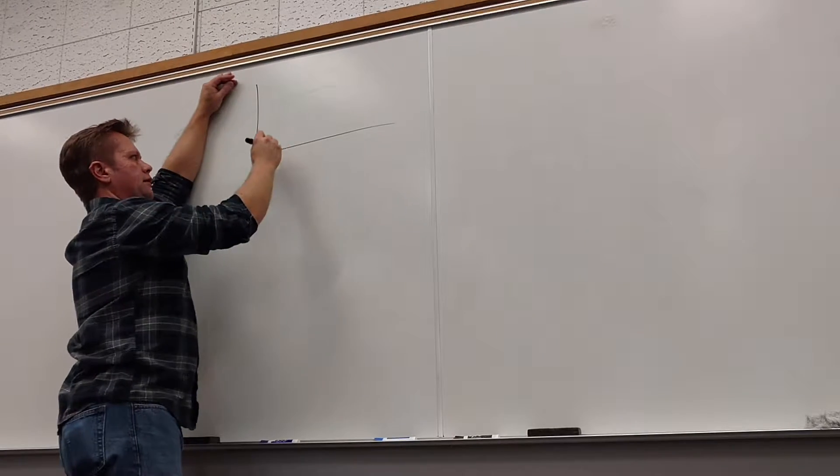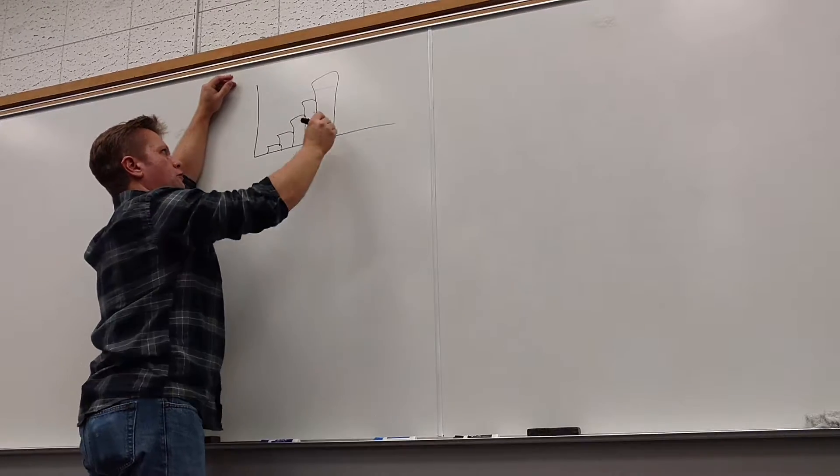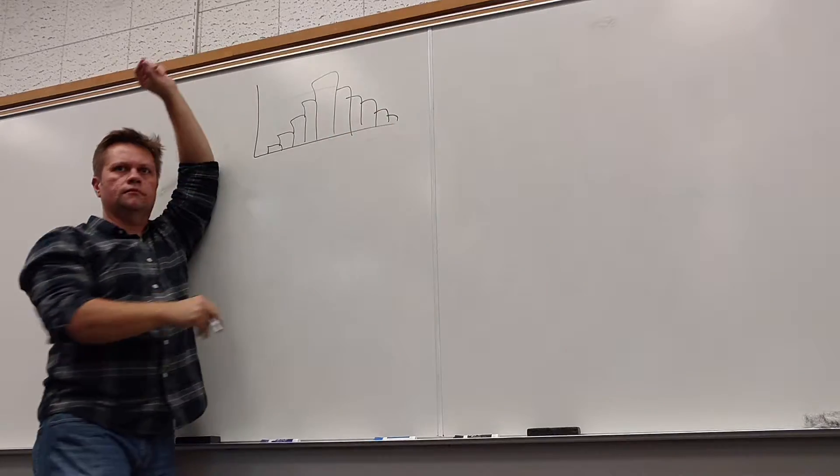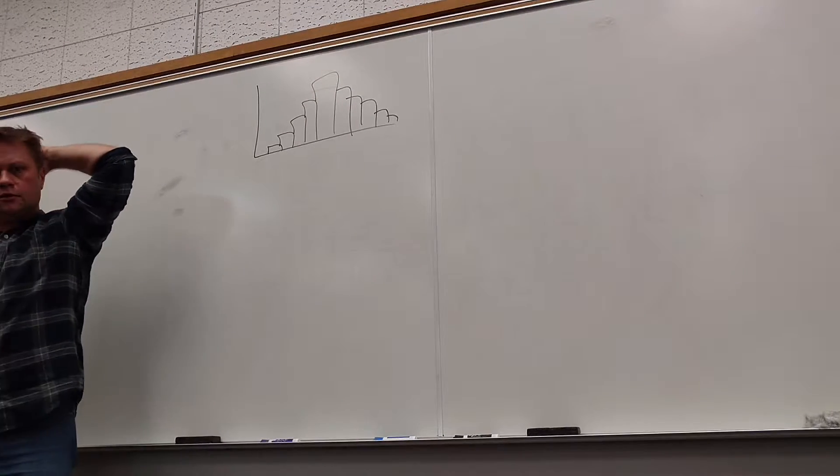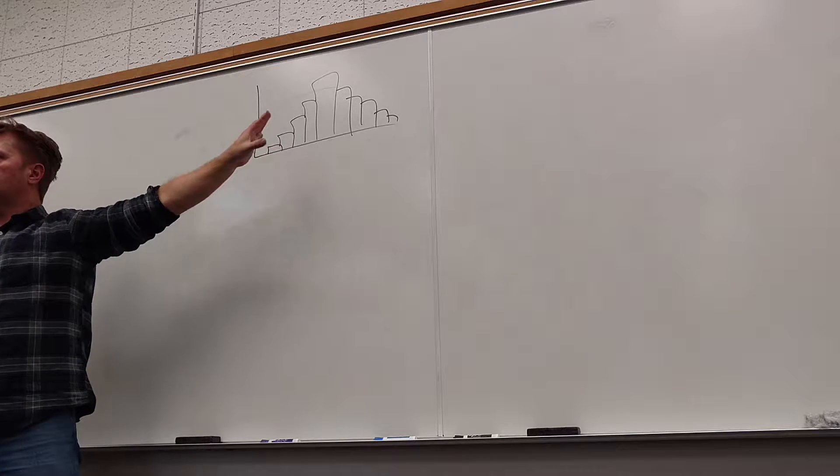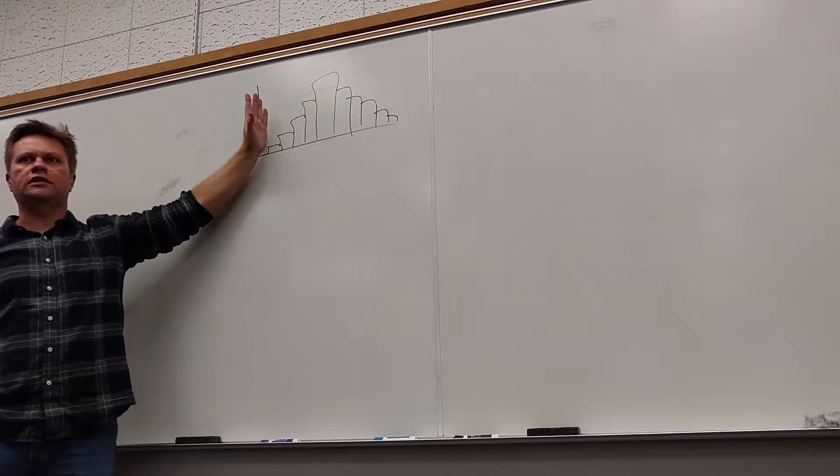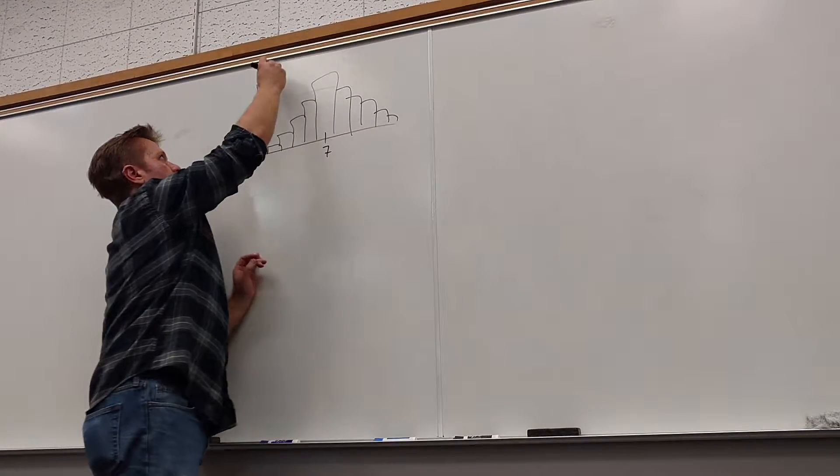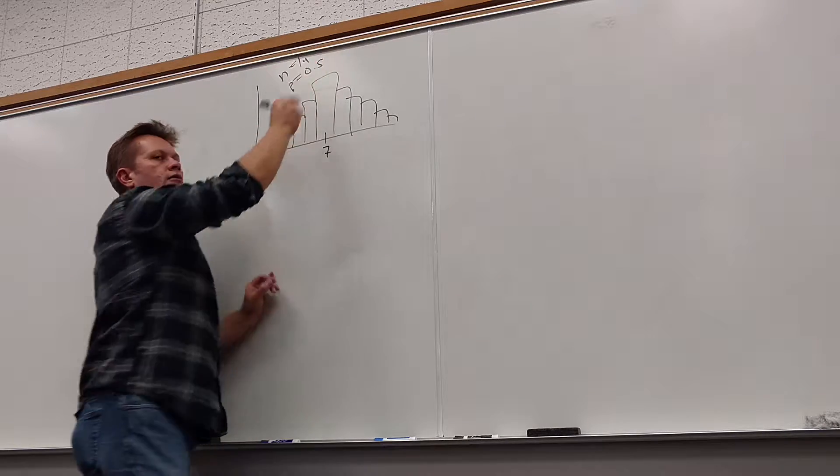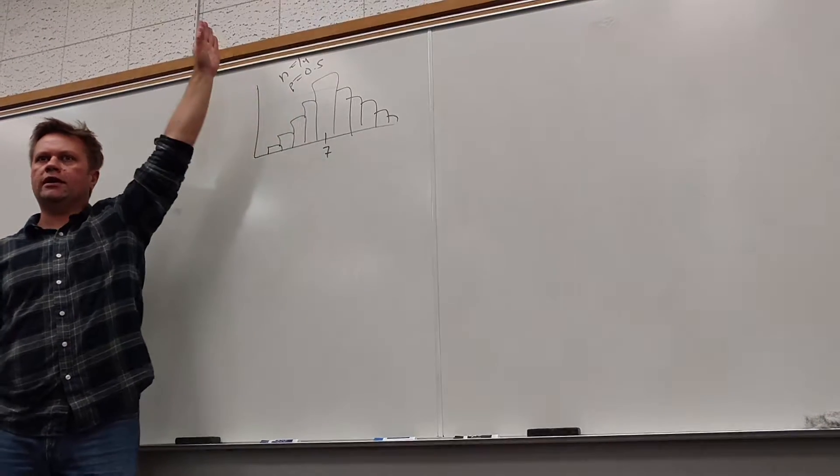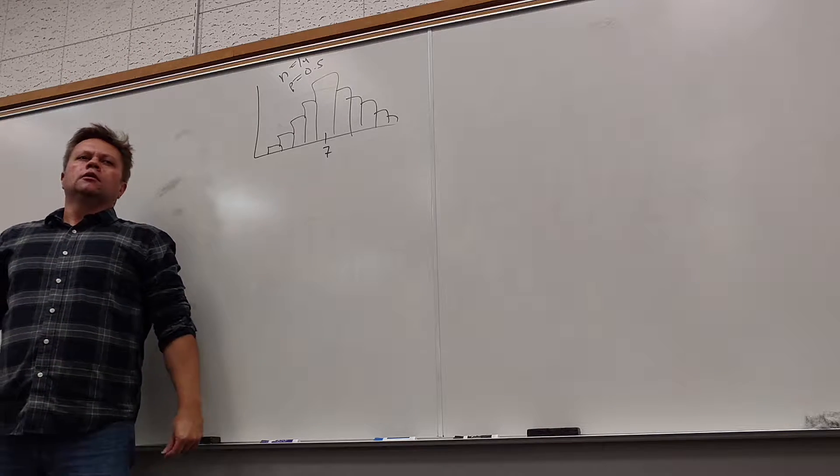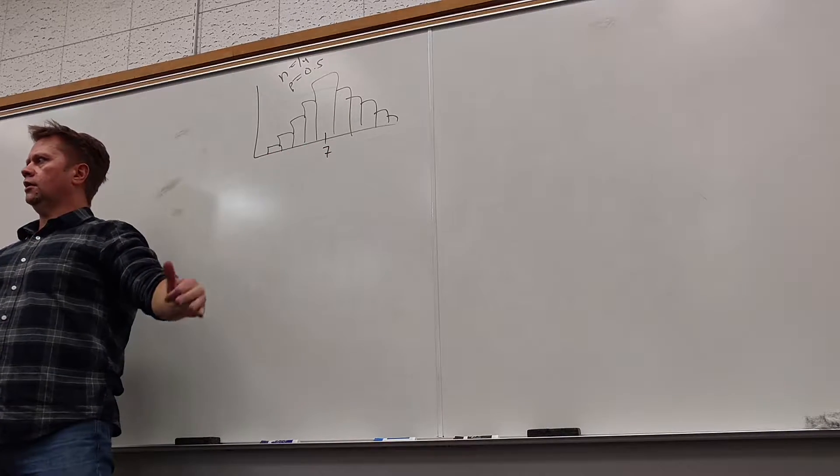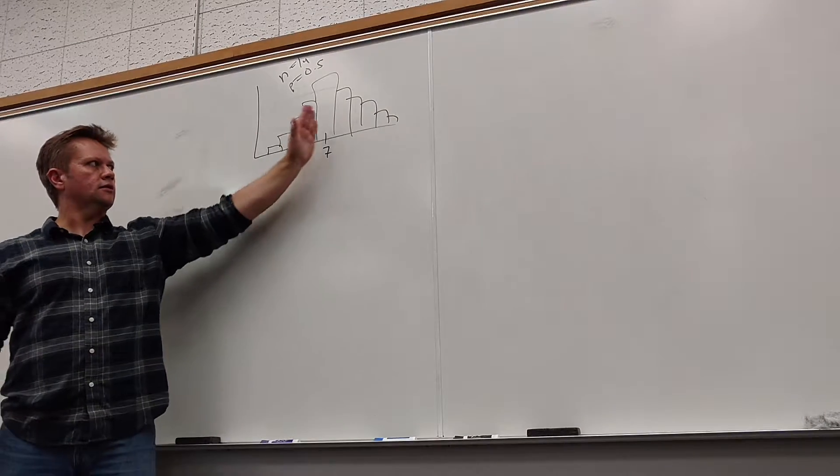Do you guys remember that handout about flipping a coin that we looked at a while back? Right in the middle there was this histogram, and the tallest bar makes sense that it was seven, because we were flipping it 14 times. That's the average. I would expect seven to happen most often. Does that look normal? Yeah, totally. Where's the mean? The mean is right here, right?